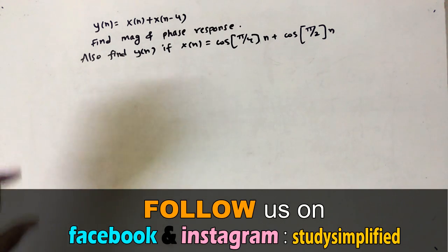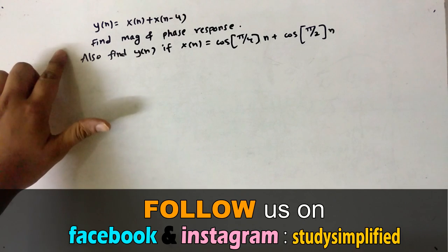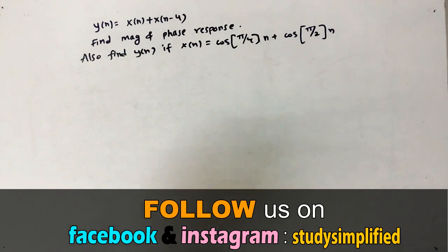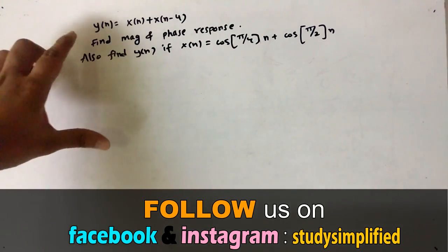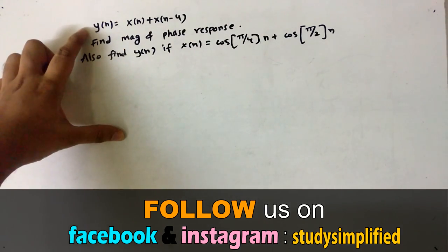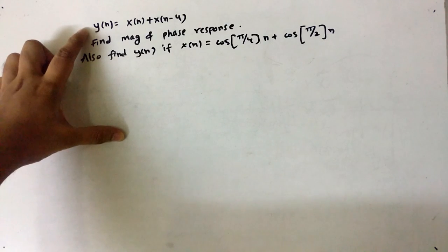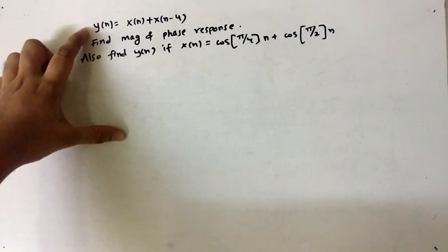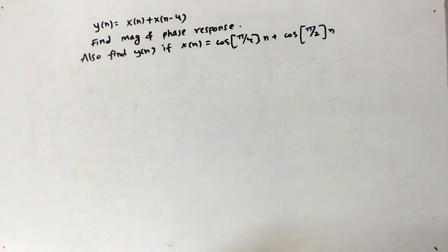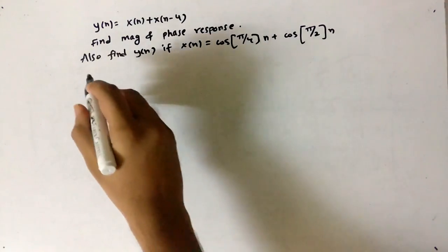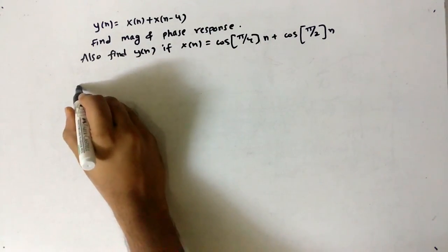Hello friends, today our topic is to find the magnitude and phase response. The difference equation given is y(n) = x(n) + x(n-4). We will see some simple steps on how we can find that.